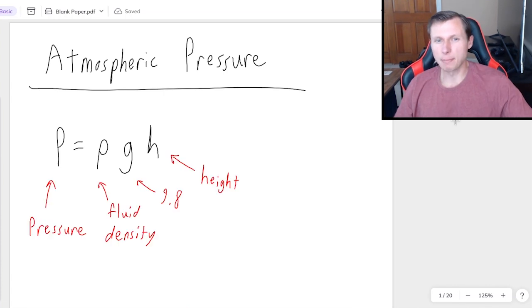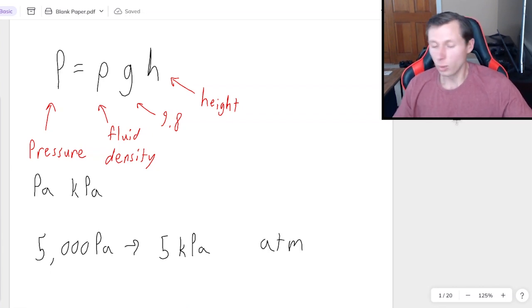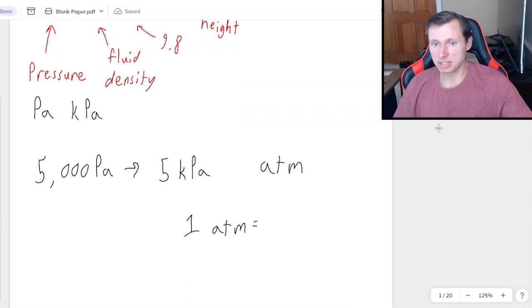So P is going to be the pressure of our fluid usually measured in either pascals or kilopascals, which is just pascals divided by a thousand. Like for instance if I have 5,000 pascals, well to get to kilopascals it's just like a kilometer, divide by a thousand and that's five kilopascals. Or the other famous pressure unit we have is the ATM, where one ATM atmospheric pressure is equal to 101.3 kPa kilopascals.